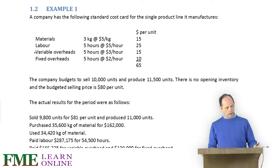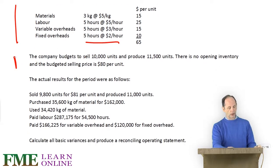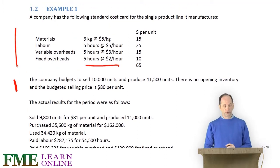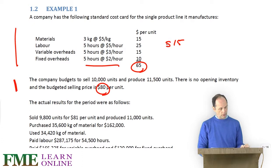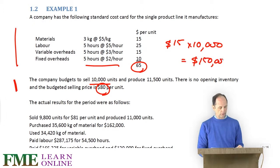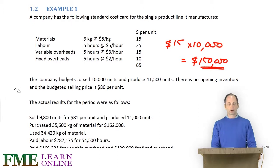In Example 1, we have a standard cost card, as you can see. We have materials, labour, variable overheads, and fixed overheads. Fixed overheads are absorbed inside the unit costs — 5 hours at $2 per hour, so $10 per unit. The company is budgeting to sell 10,000 and produce 11,500 units. There is no opening inventory and the budgeted selling price is $80 per unit. Before we start on the actual results, we can work out the budgeted profit. We have $65 of costs and $80 of revenue, so that is $15 on every item, and we are intending to sell 10,000. So 15 times 10,000 gives a budgeted profit of $150,000 under absorption costing. No need to worry about producing more than we sell, because that will be looked after by the closing inventory valued at the standard $65.